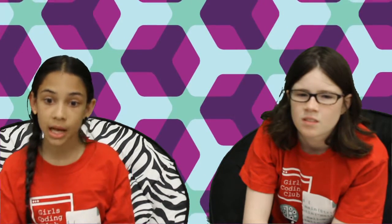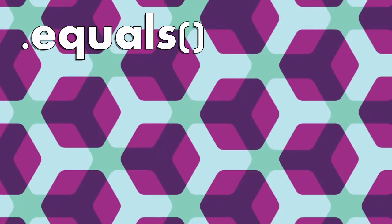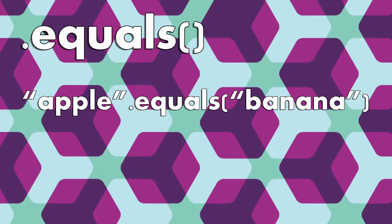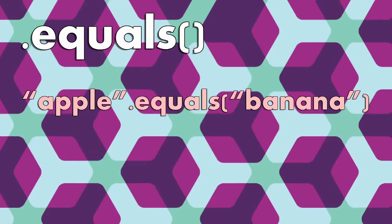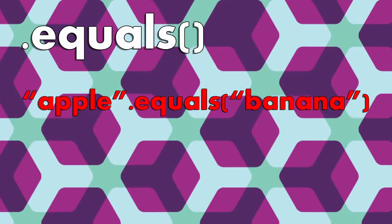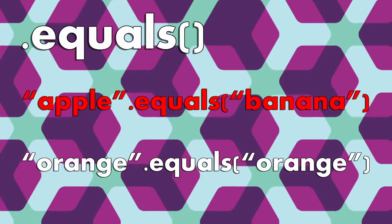If we're comparing something other than two numbers, like two strings, we'll need to use a method called equals instead of two equal signs. For example, apple equals banana is false, and orange equals orange is true.